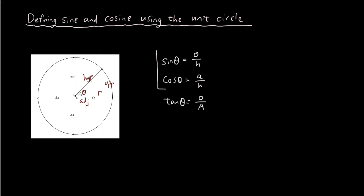Today we're just going to focus on sin θ and cos θ. If you look at sin θ equals opposite over hypotenuse — what is the value of the hypotenuse in this circle? Since this is a unit circle, the hypotenuse is equal to 1, because the radius from the center to the circumference equals 1. So sin θ is opposite divided by 1, which is just the opposite.